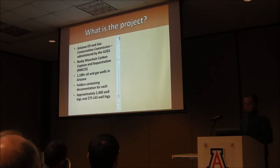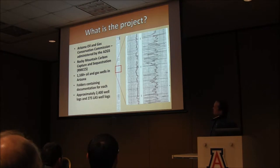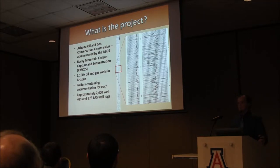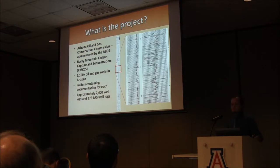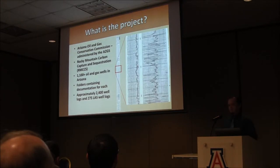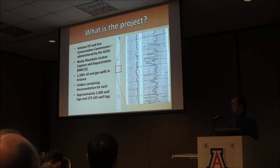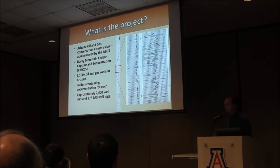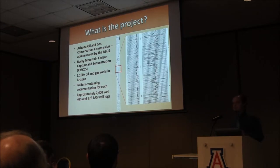Within the state of Arizona there are approximately 1,100 well logs, possibly closer to 1,200. Each well log has a folder associated with it containing documentation — permits and legal information that goes along with getting a permit to drill a well. There are also about 2,400 well logs associated with all these different wells. Some only have one type of log; some have five or six. All of these logs are available as TIFF images — they've all been scanned. Hard copies are also available at the survey.